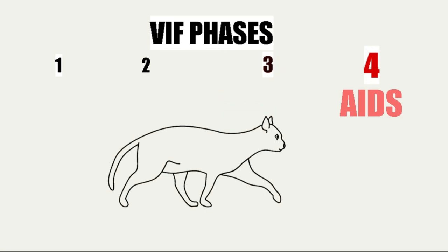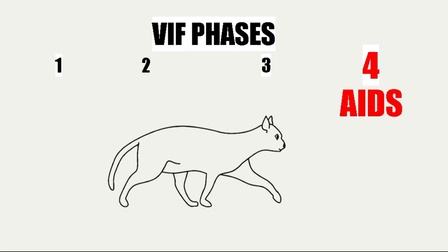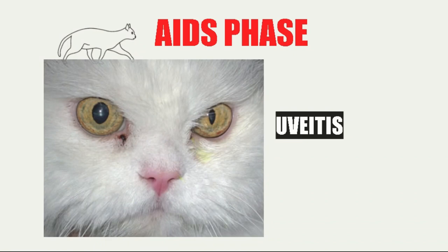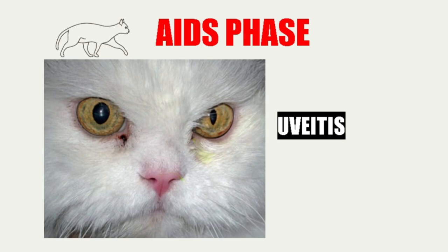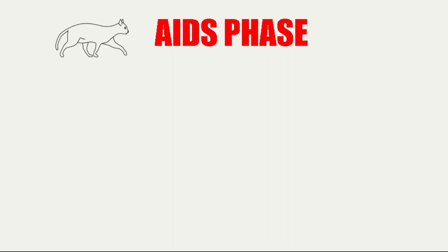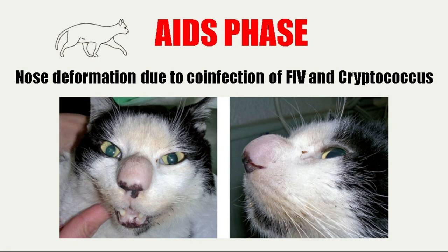Next is the AIDS phase, in which different signs caused by immunodeficiency appear. There may be damage due to the feline AIDS virus itself, or due to other agents that complicate the picture. We can observe neurological signs, since the virus crosses the blood-brain barrier to reach the brain. There may also be uveitis, co-infection with Cryptococcus, pododermatitis, inflammation of the gums, or gingivostomatitis.